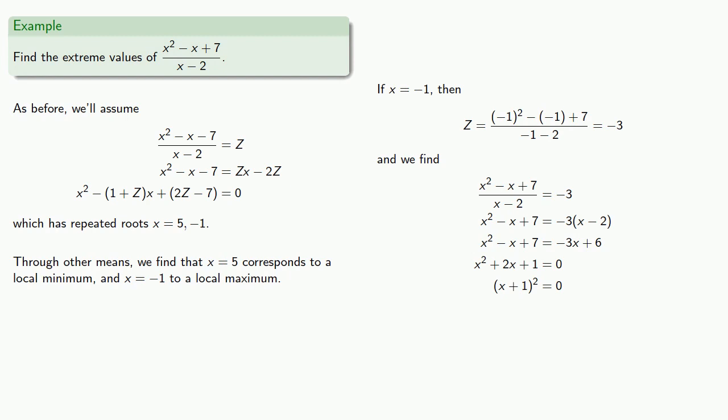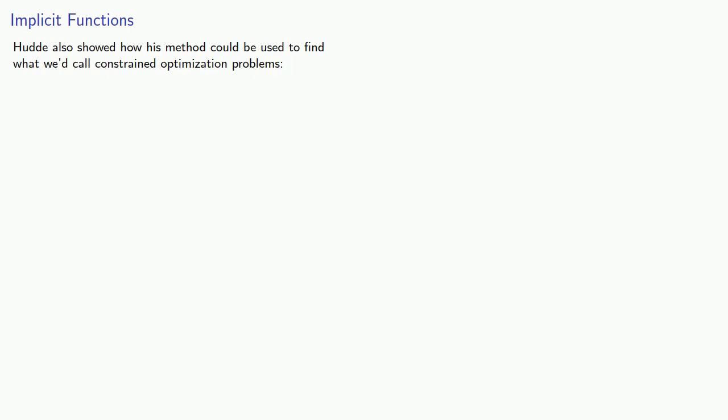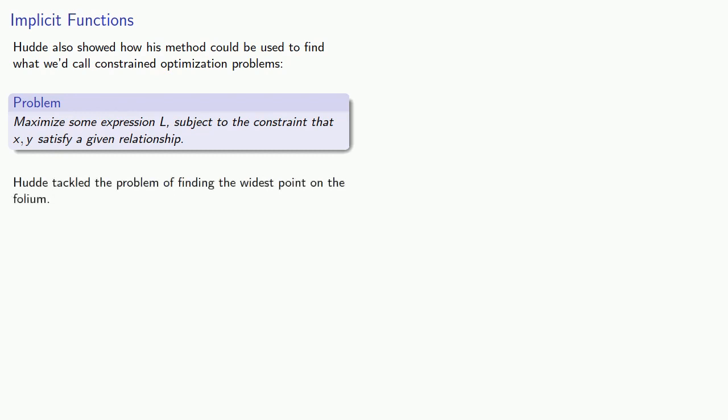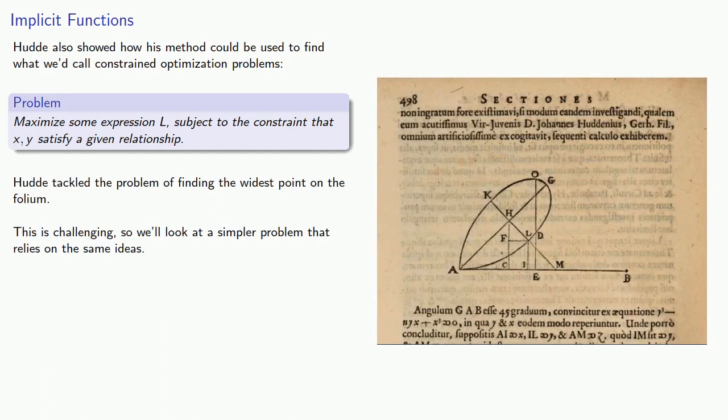Hood also showed how his method could be used to find what we'd call constrained optimization problems. This is maximize some expression subject to the constraint that x and y satisfy a given relationship. Hood tackled the problem of finding the widest point on the folium, but this is very challenging, so we'll look at a simpler problem that relies on the same ideas.